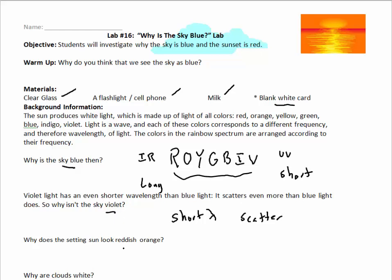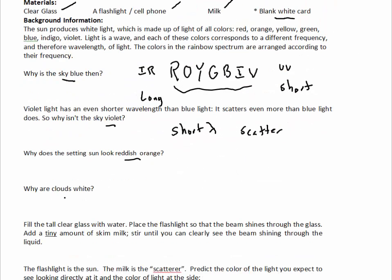And I'll leave you to ponder that. Why does the sun look reddish orange, especially when there's like smoke, when we have a case like this? And why are clouds white?